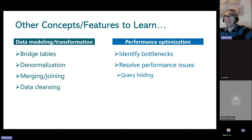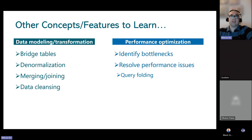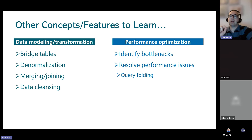Other data modeling and transformation concepts to know for DP-600: bridge tables and when to use them, denormalization, merging and joining data, and data cleansing techniques applicable via Power Query Editor, T-SQL, or notebooks. For performance optimization, you need to identify and resolve bottlenecks. Query folding is the most common source of performance issues in Power Query transformations — learning it helps you resolve those bottlenecks.